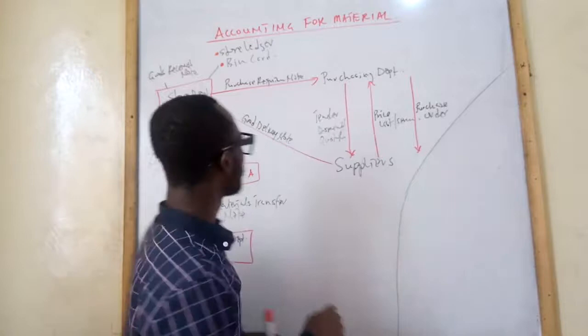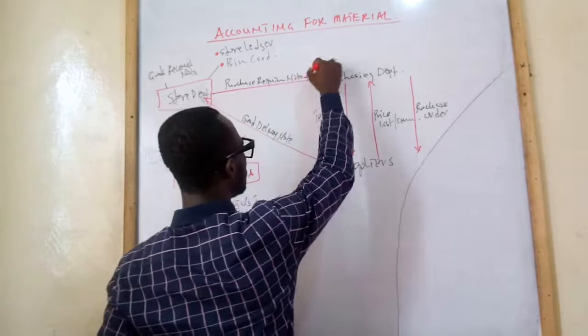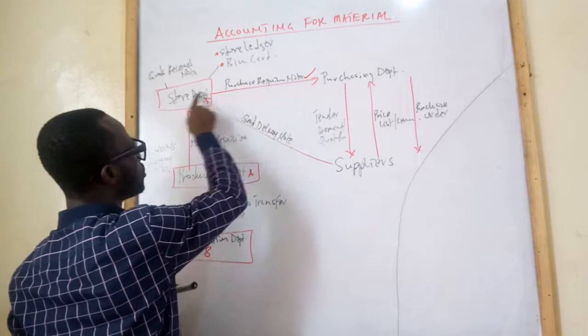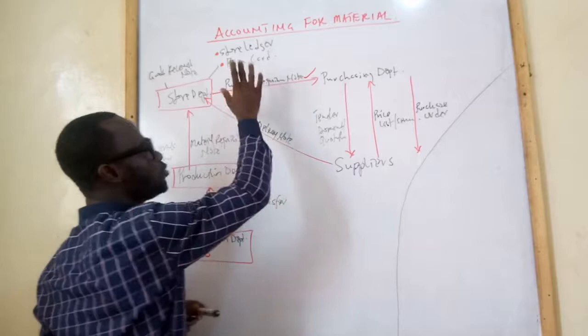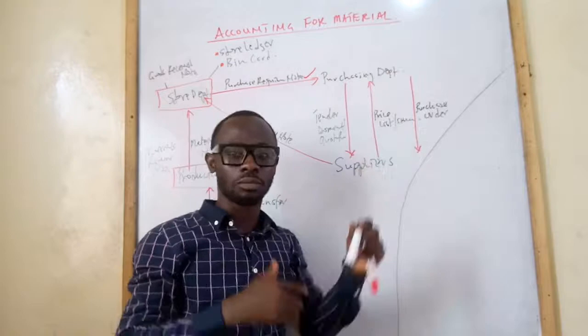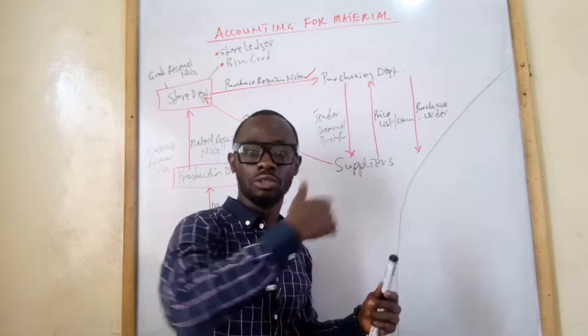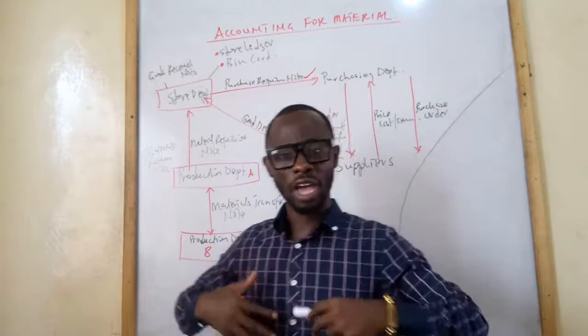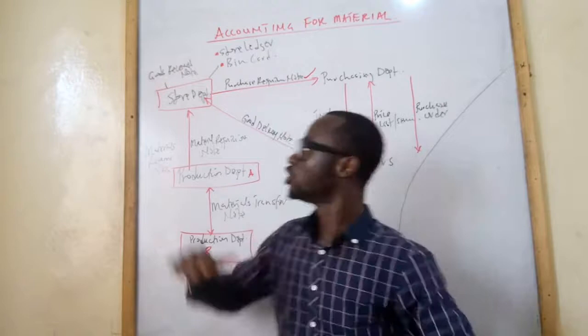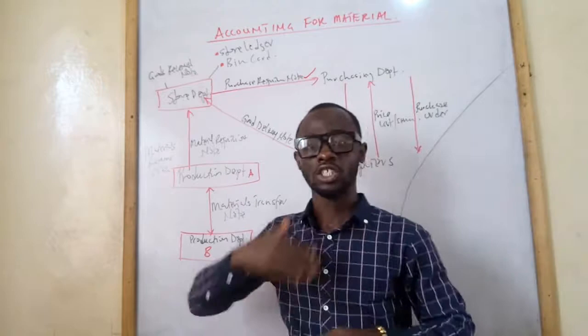The first document is the purchase requisition note. From the diagram, the purchase requisition note flows from the storekeeper to the purchasing department. It is a document prepared by the storekeeper to notify the purchasing department about the various materials that need to be bought or new stocks needed for replenishment. When stock levels fall after issuing to production, the store department prepares this note to inform purchasing about raw materials to be procured.